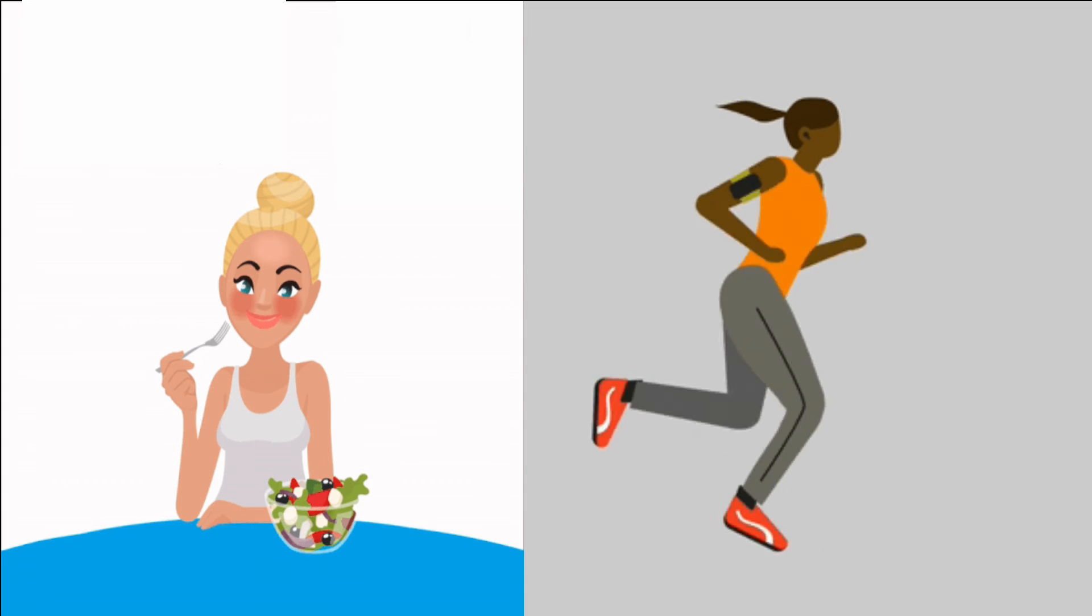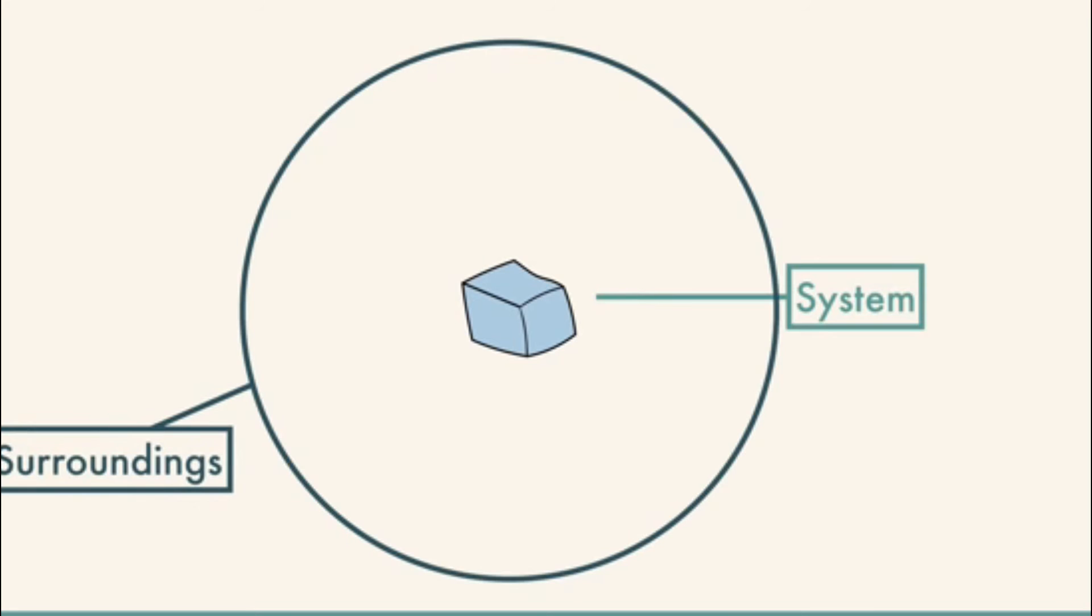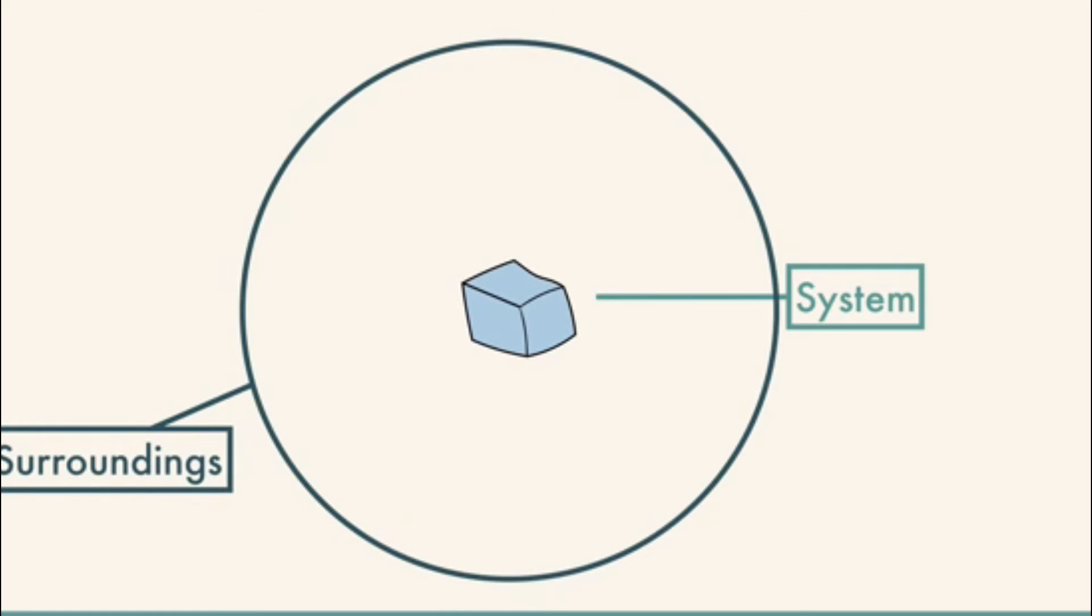When we talk about heat, we need to consider two things: the system and the surroundings. The system is the part of the universe that we are going to study, while surroundings refers to everything else. In our example, the ice cube is the system, and the surroundings include the air and the surface where the cube is on.